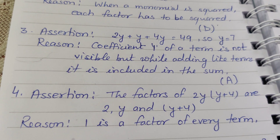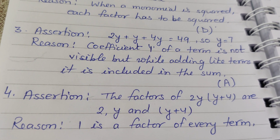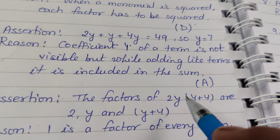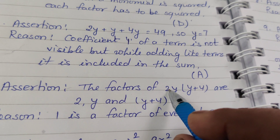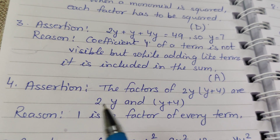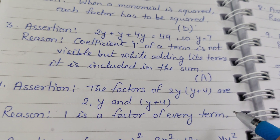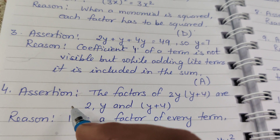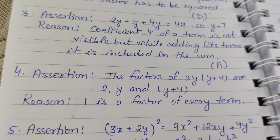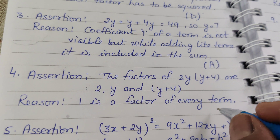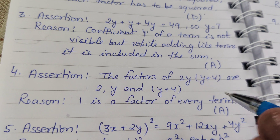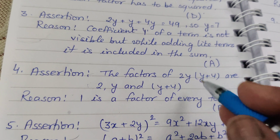Question 4 — Assertion: The factors of 2y(y+4) are 2y and (y+4). The reason states that 1 is also a factor of every term. Both assertion and reason are true, and reason is the correct explanation, so the answer is A.